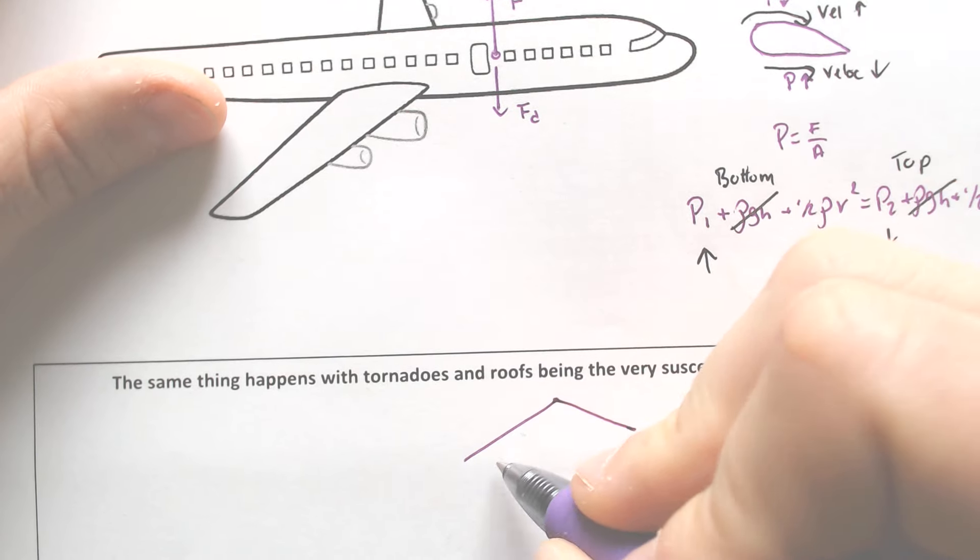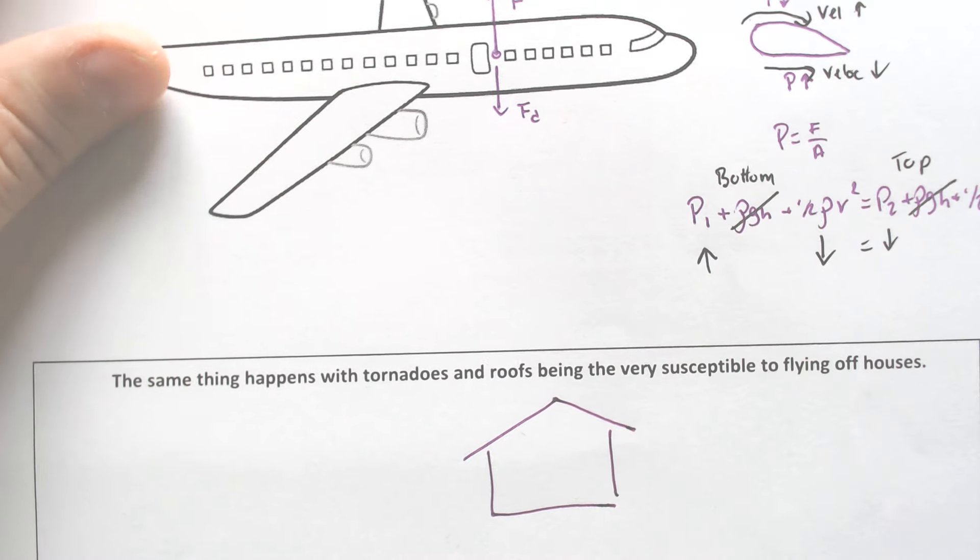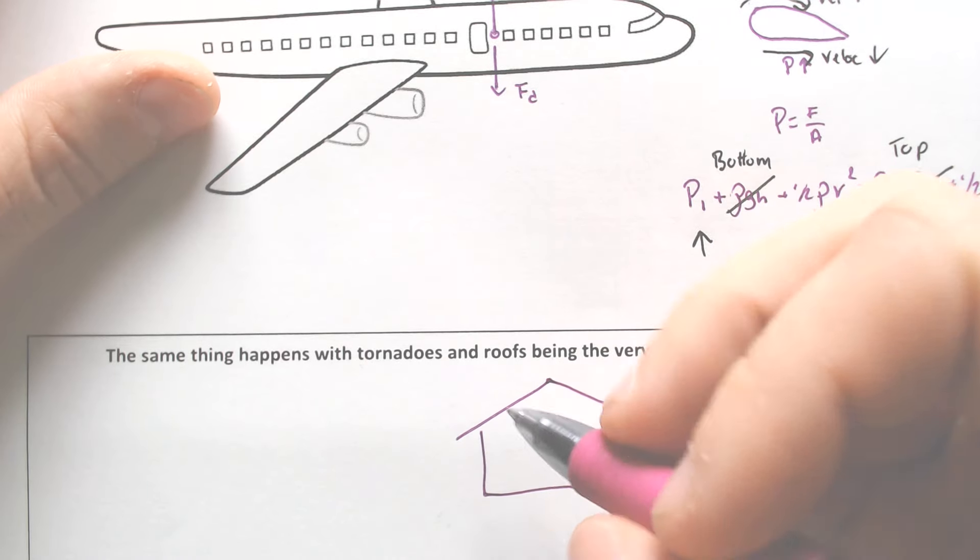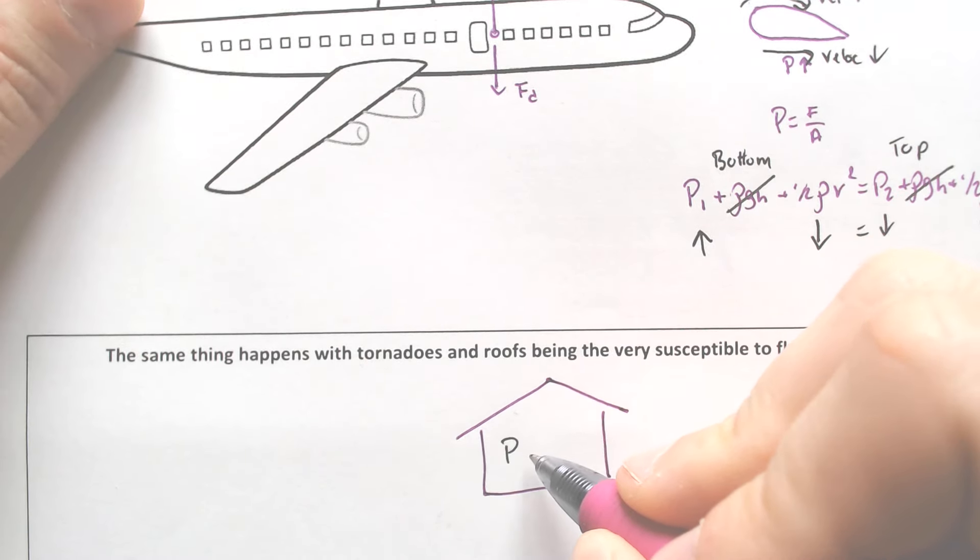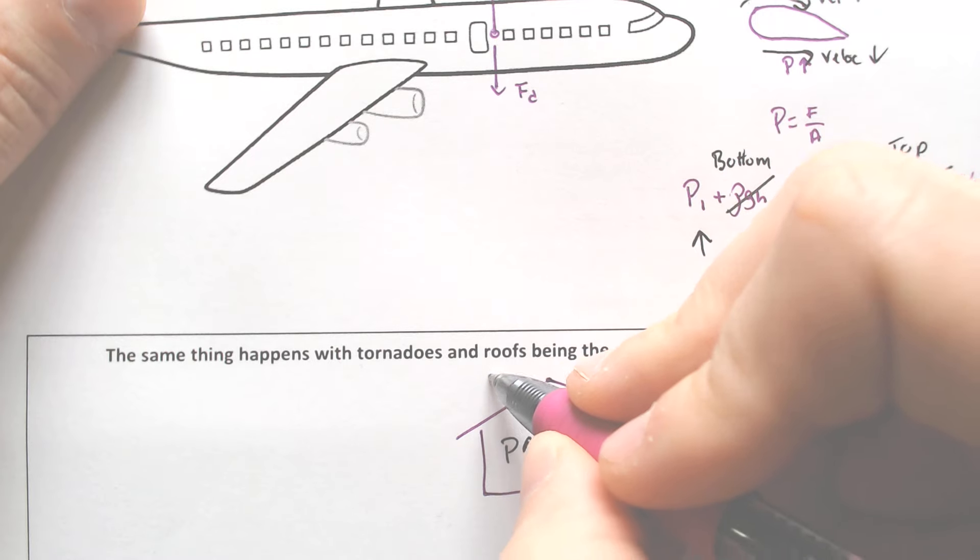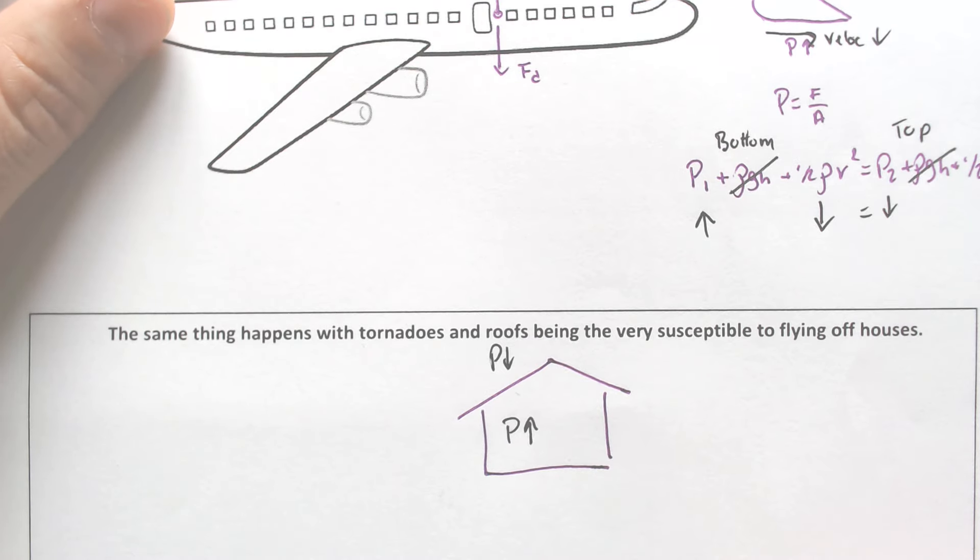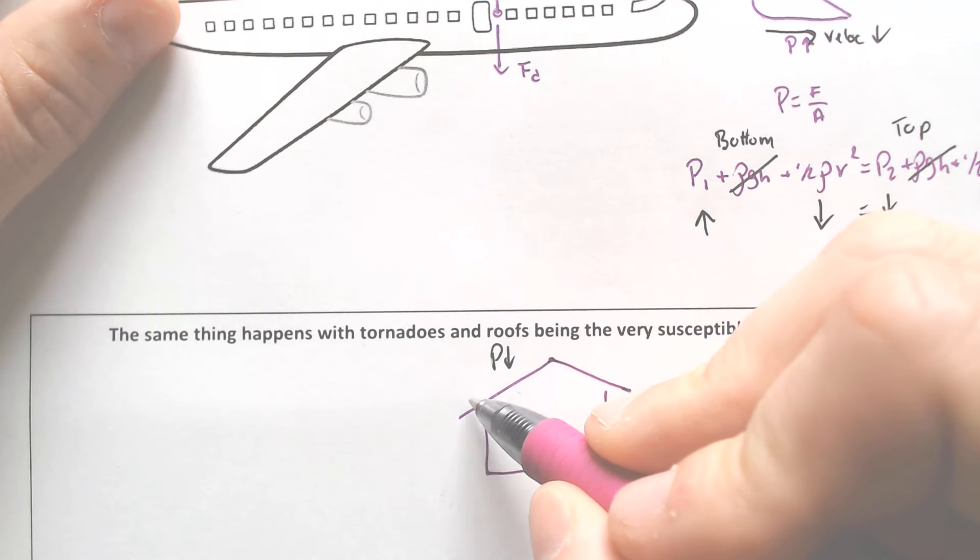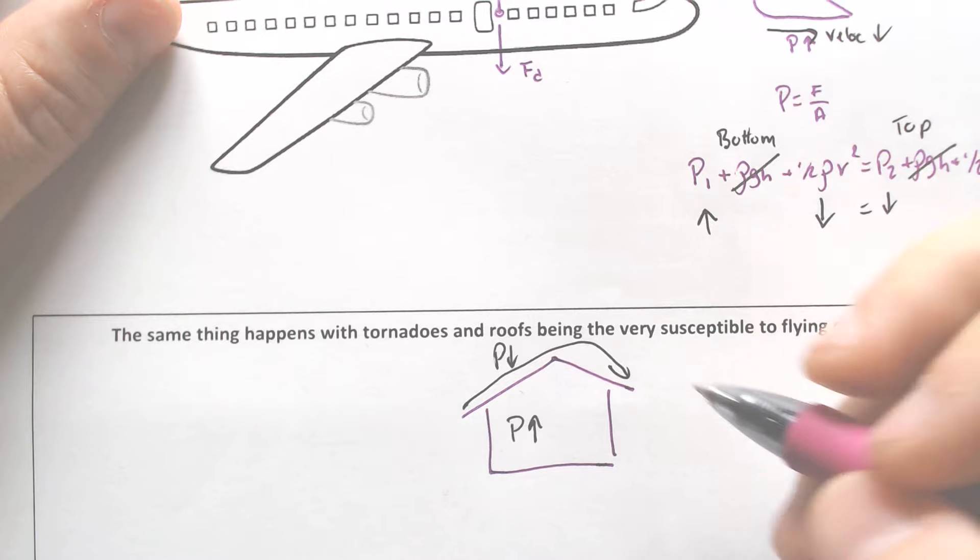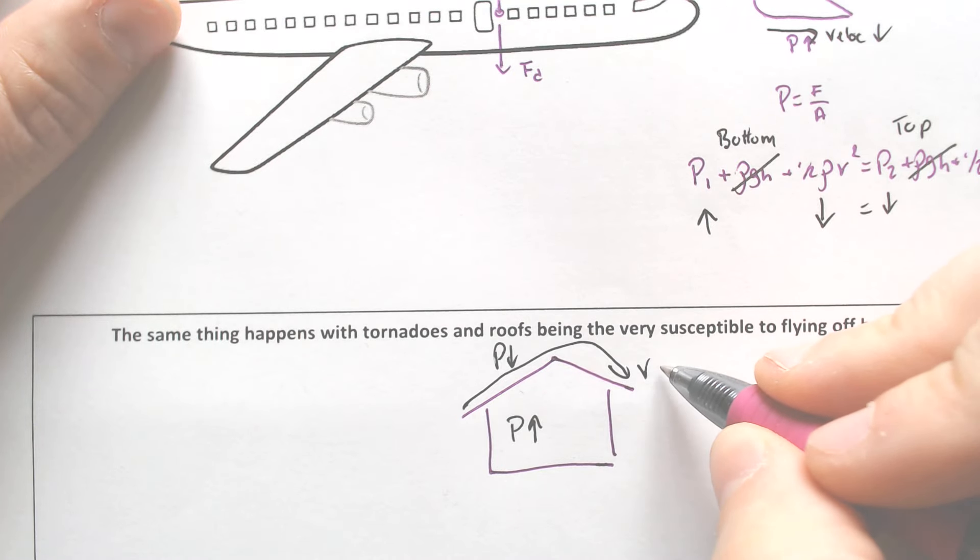So if we have a building here, look at that house. Perfect definition of that. We would need the pressure on the inside to be greater than the pressure on the outside. Well, when we're talking about roofs, it's pretty obvious that the air is moving on the outside, right?